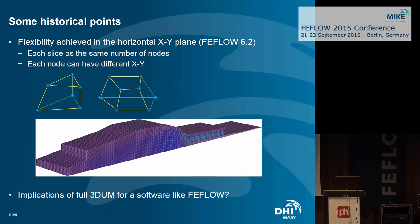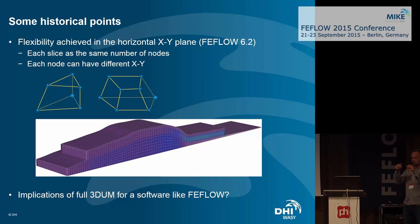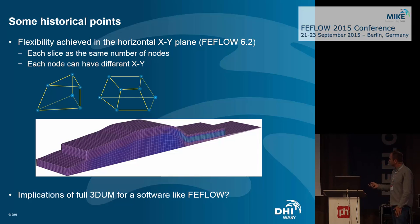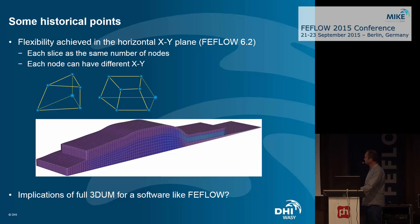The flexibility was, to some extent, already there, although a bit hidden, in FEFLOW 6.2. We still had layered meshes, but each slice could have different XY coordinates — motivated by PNG and the work of Vladimir Milny to accommodate swelling in a mesh. That was the first level of flexibility, but we had no real tools to make it usable. But now we are really fully unstructured in the 3D space.